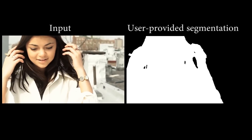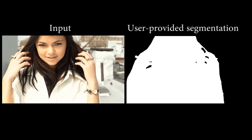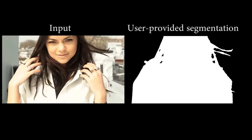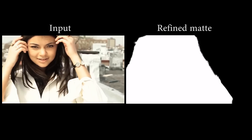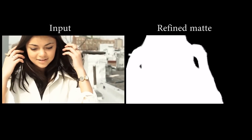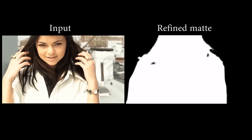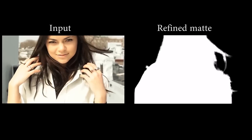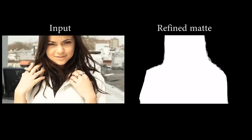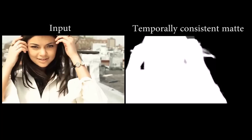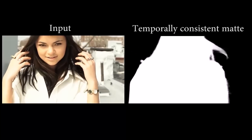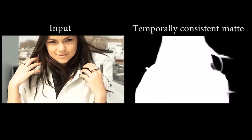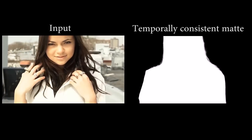We can also handle spatially varying color grades by computing the transformations for each segment of a user-provided binary segmentation, which is transferred to an alpha matte and further temporally smoothed. All results in this video use user-specified mattes.